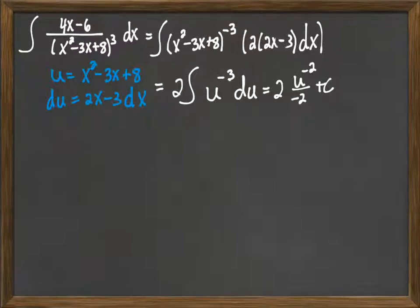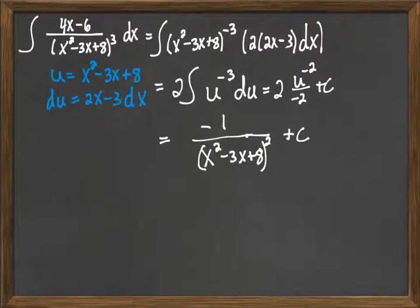And then 2 and a negative 2 will cancel out, and so I get negative 1 over u to the 2nd, but u is equal to x squared minus 3x plus 8. Okay, and so that's the process that we use here.